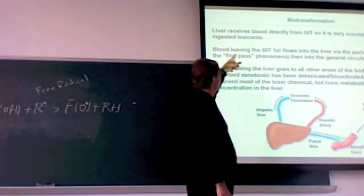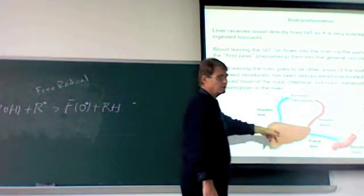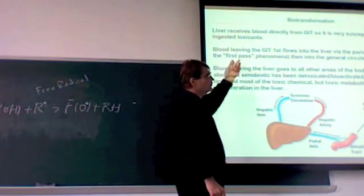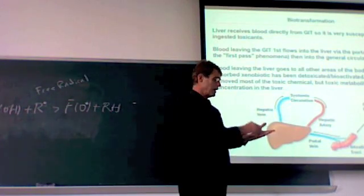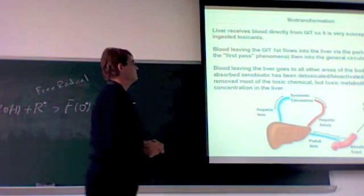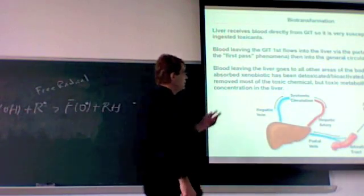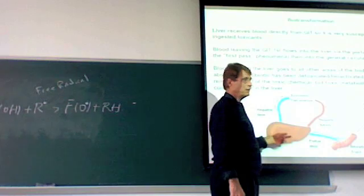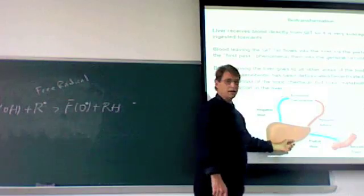So the problem here is that the blood which leaves the gastrointestinal tract with all the toxins goes to the liver first. This is called the first pass phenomenon. It's the first organ that gets contacted by this toxin. So even if the toxic chemical has been detoxified here, there's a lot of perhaps toxic metabolites that are still in high concentration.